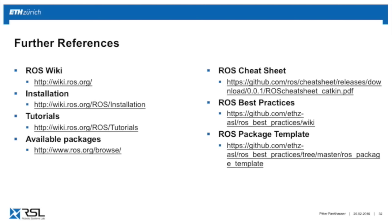This is the end of the first lecture. For questions, the internet is full of information. The most important website is wiki.ros.org, with documentation and tutorials on all the topics we discussed. There's also the ROS installation website and tutorials. Before programming something, check existing software at ros.org/browse, where all ROS packages are listed. There's also a ROS cheat sheet, and you quickly learn these commands by heart.